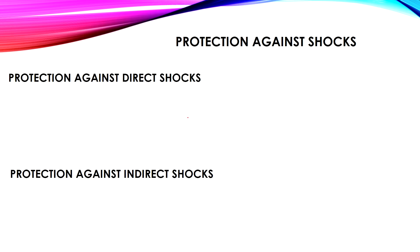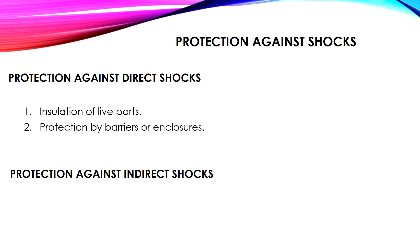To protect humans against direct shocks, we have two measures. First, we must insulate the live parts — the bus bars should not be easily exposed, because anyone who touches them will receive a fatal shock. Second, we must protect humans by placing barriers or enclosures between them and the live parts.